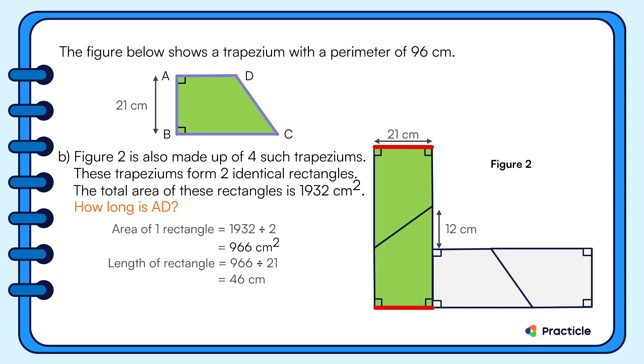From the diagram, we can tell that this part is 12 centimeters. But what about this part? If you look carefully, you'll notice that this length is the same as AB of the trapezium, right? So this will be 21 centimeters long.